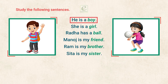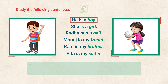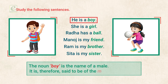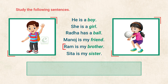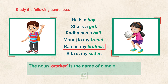In sentence 1, the noun 'boy' is the name of a male. It is, therefore, said to be of the masculine gender. Similarly, in sentence 5, the noun 'brother' is the name of a male. It is also said to be of the masculine gender.